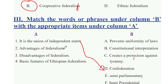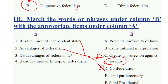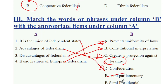The advantage of federalism includes the uniformity of law and constitutional interpretation. The disadvantage of federalism relates to the uniformity of law as well. Basic features of federalism include advantages in the context of the parliamentary and presidential systems of democracy.